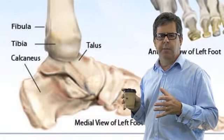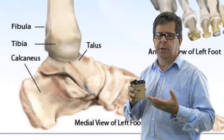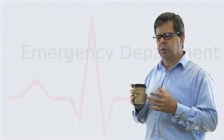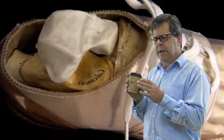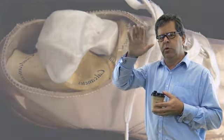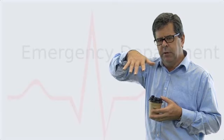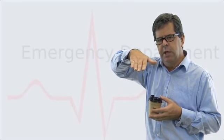The ankle joint is made up of the talus, the tibia, and the fibula—that talotibial joint. The talus is trapezoidal shaped, so when you have plantar flexion of the ankle, it becomes somewhat unstable.